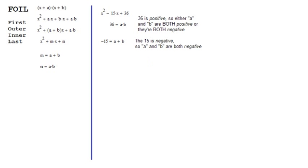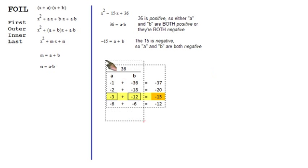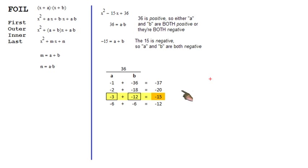So when you're making your table, all of your possible values of a and b are going to be negative. Negative 1 times negative 36, negative 2 times negative 18, negative 3 times negative 12, negative 6 times negative 6. These are all the factors of 36. So when you're adding them to figure out where n is, this negative 15, this is your pair right here. Negative 3 and negative 12.